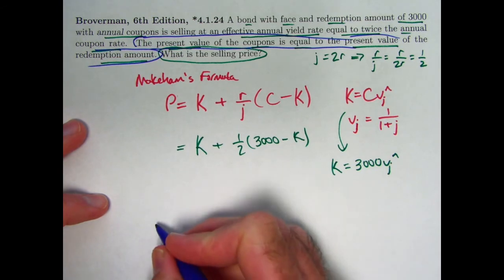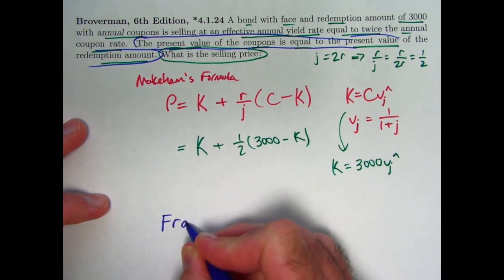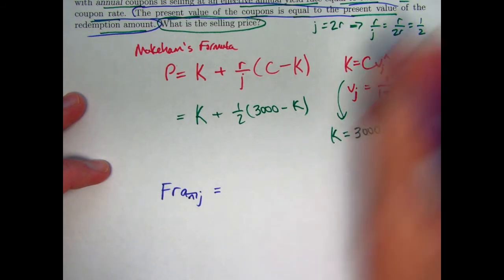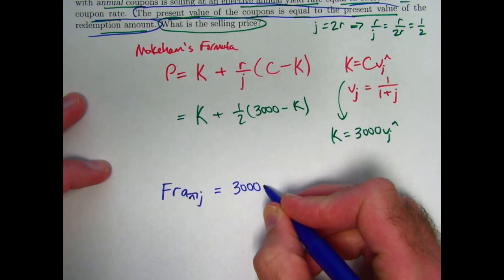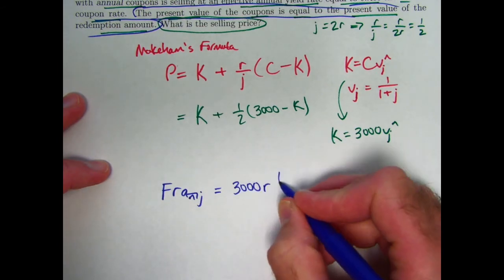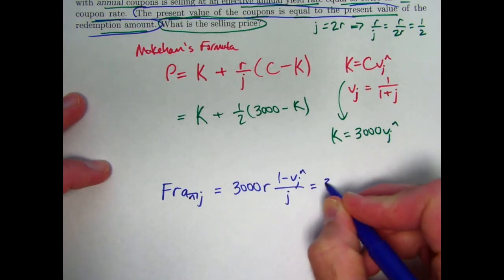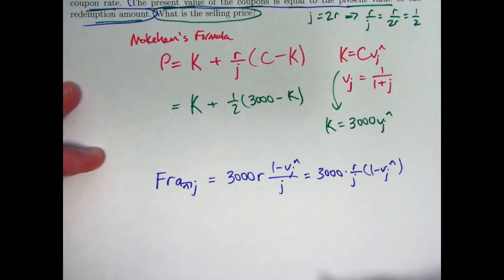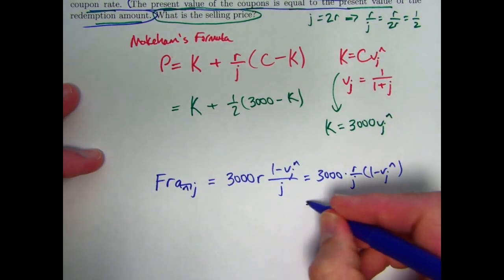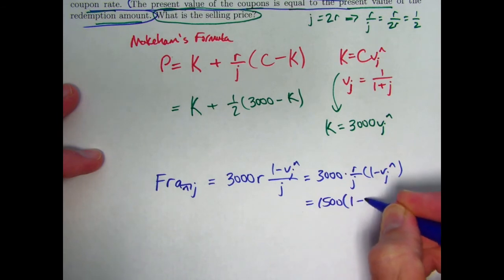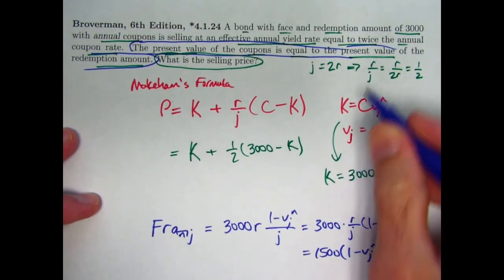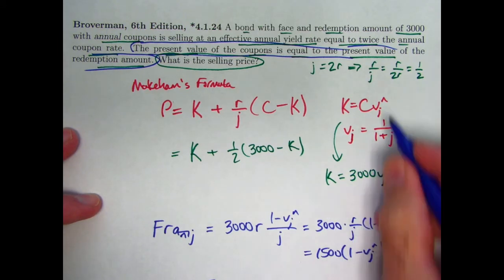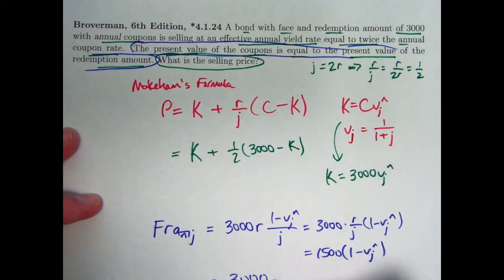Present value of the coupons would be F times R times A-N-J. For this problem, F is the same as C is 3,000. We don't know R, we don't know J, but we do know their ratio. Let me go ahead and put R in there and put the formula for A-N. And then we can write R over J again like this. And once again, R over J, just like before, is equal to 1 half. So this becomes 1,500 times 1 minus V sub J to the N. And that's supposed to equal the present value of the redemption amount. Present value of the redemption amount is K is C times V to the N is 3,000 V sub J to the N.